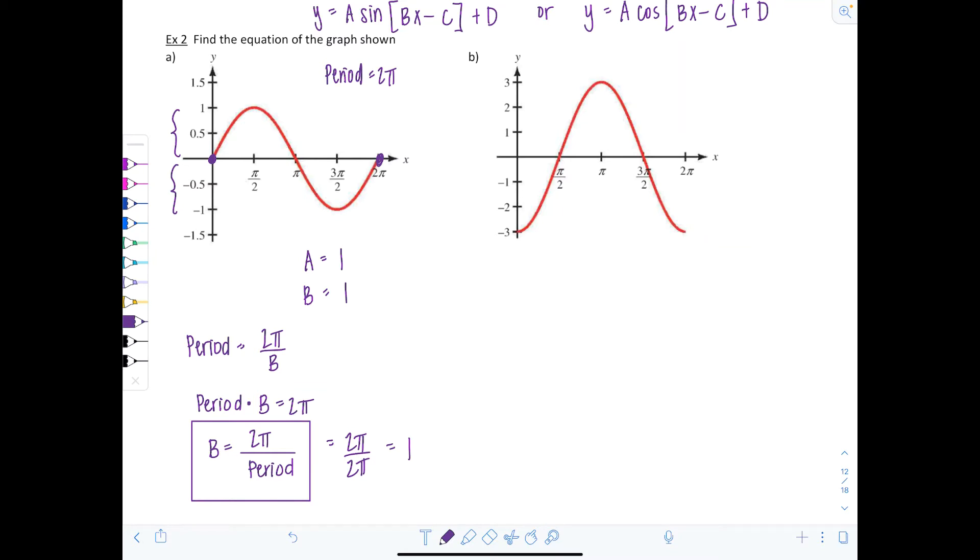Again, C is zero. There's no phase shift and D is zero. There's no vertical shift. So this was actually our good friend sine of x. Nothing fancy happened to him. This is y equals sine of x.